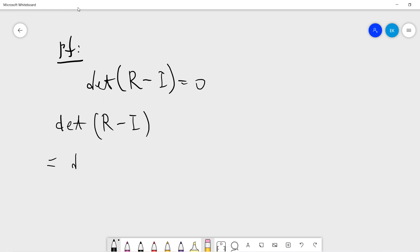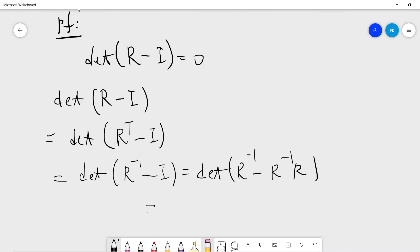We compute this. This equals, we can take the transpose. This transpose is just R inverse minus one. So it's determinant of R inverse minus one, which equals determinant of R inverse times R inverse times R, which is also determinant of R inverse times determinant of one minus R.